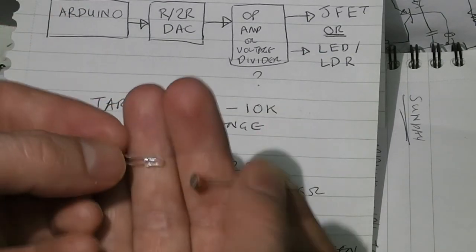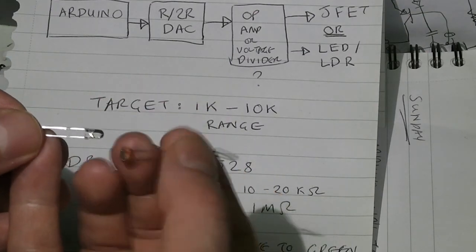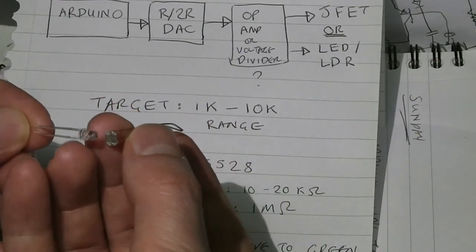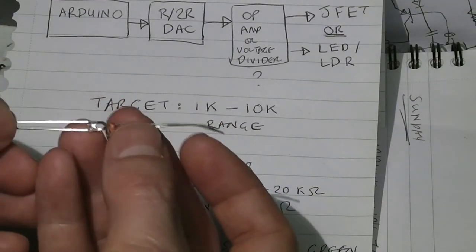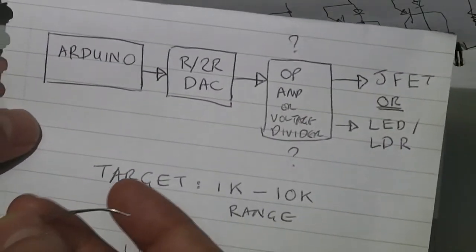The disadvantages with this approach are that the response time is likely to be fairly bad, and also it's not going to be linear, but what I was hoping to do was possibly be able to compensate for that with the Arduino if I calibrate it to specific resistances.